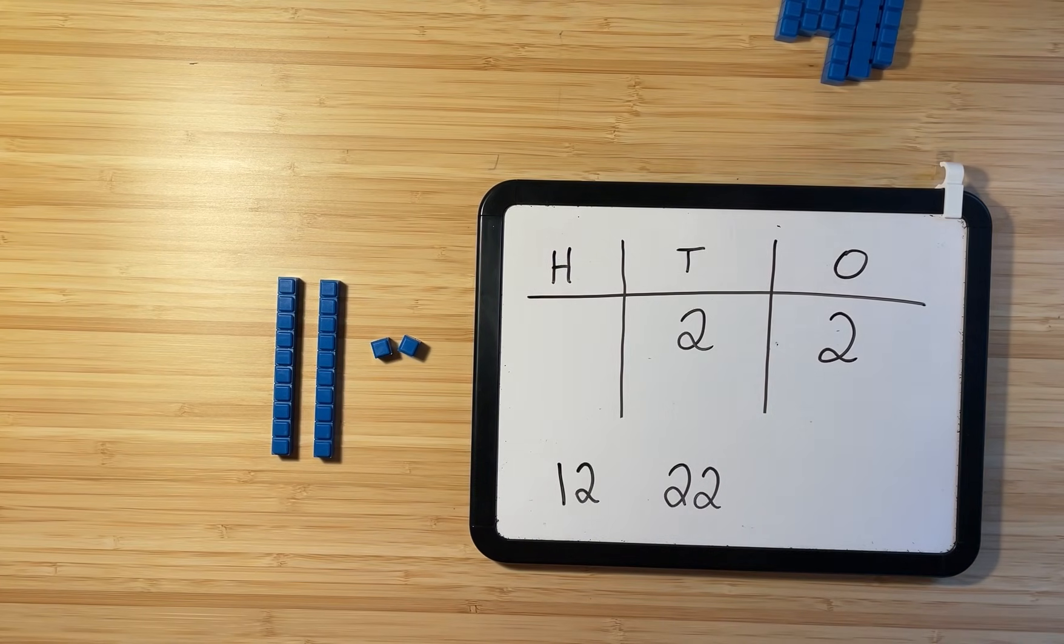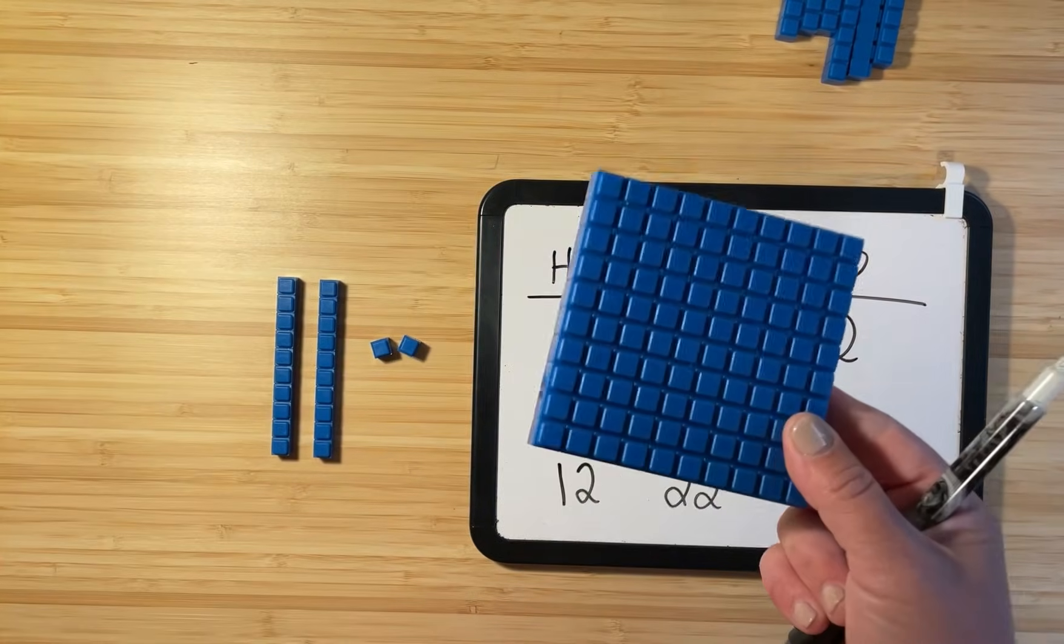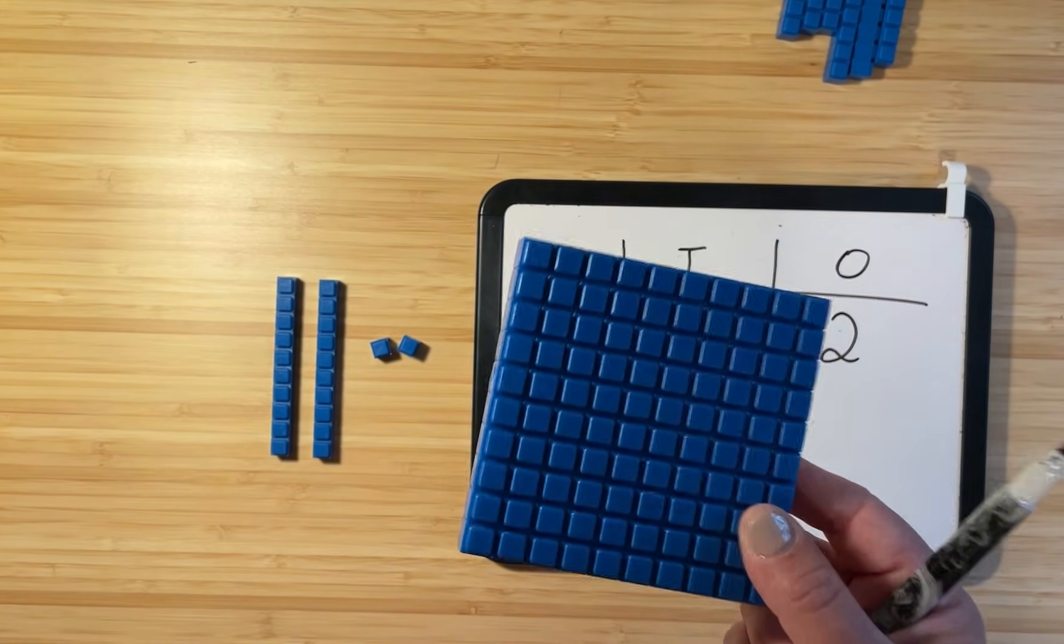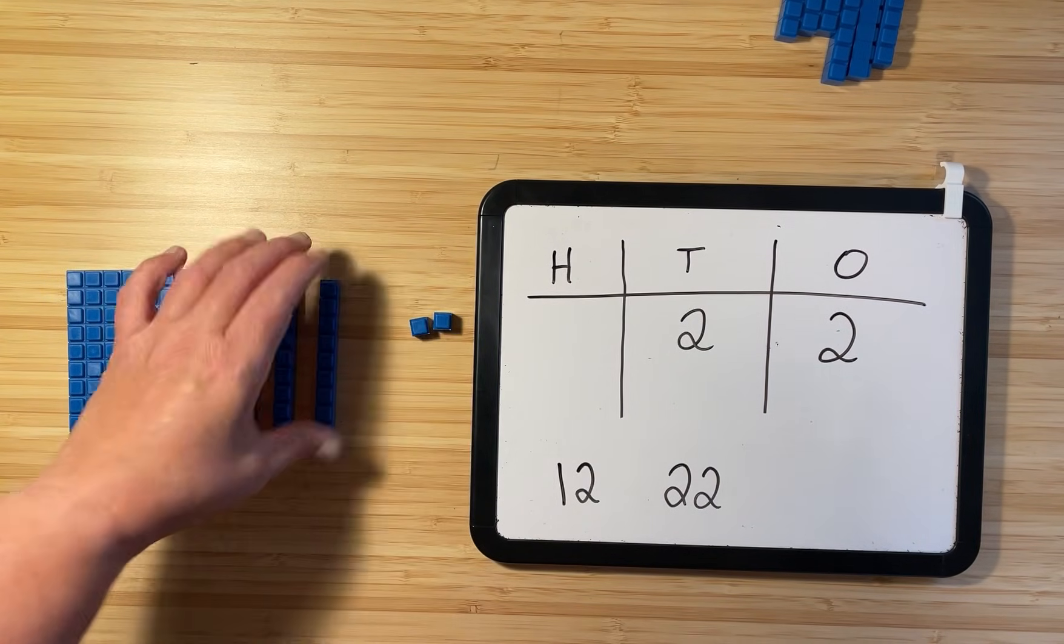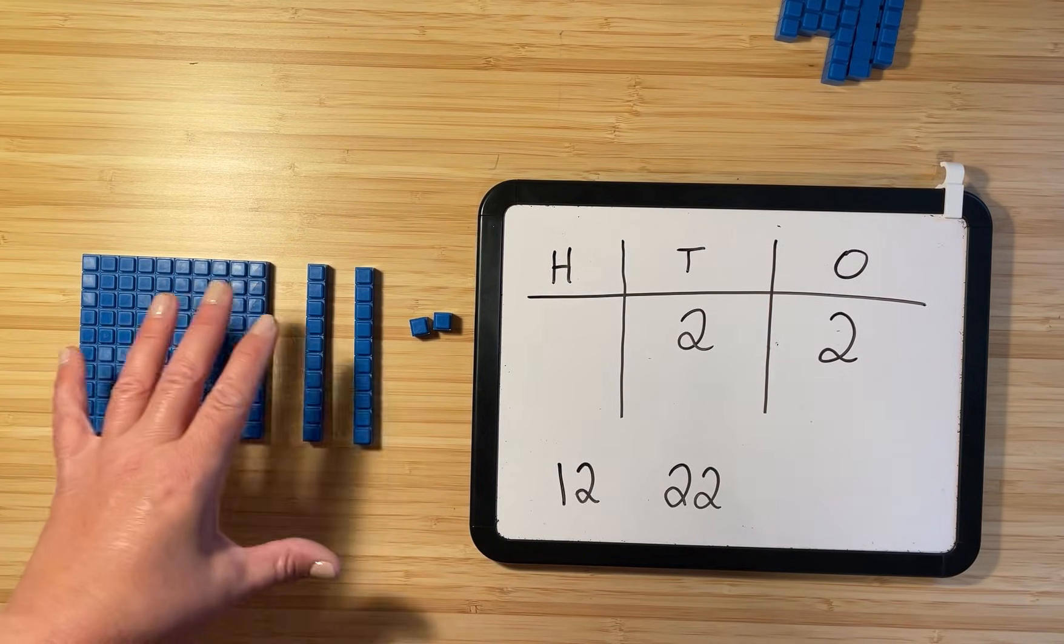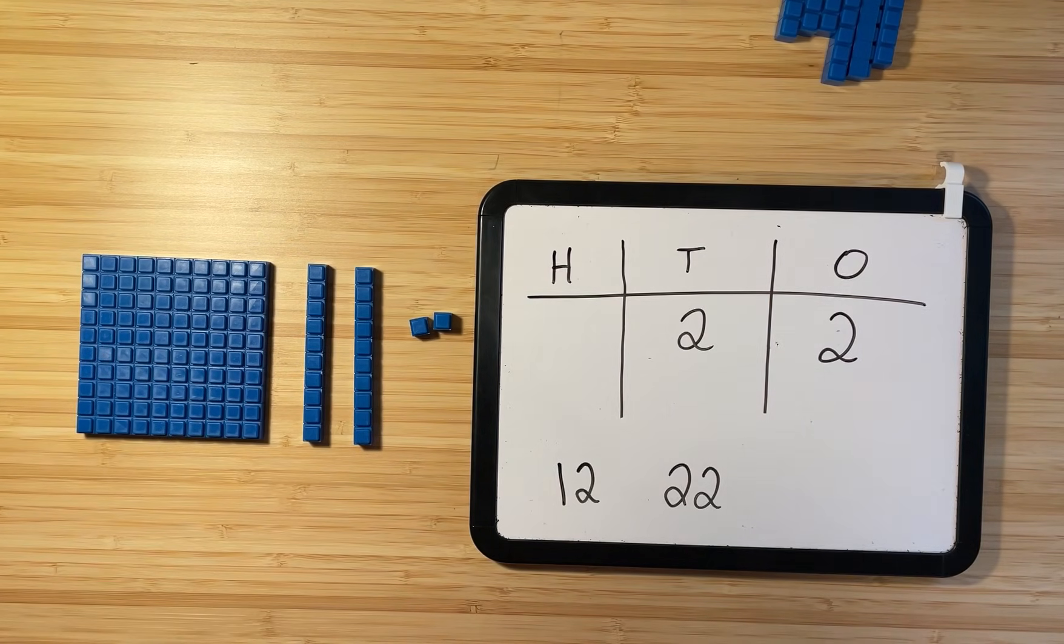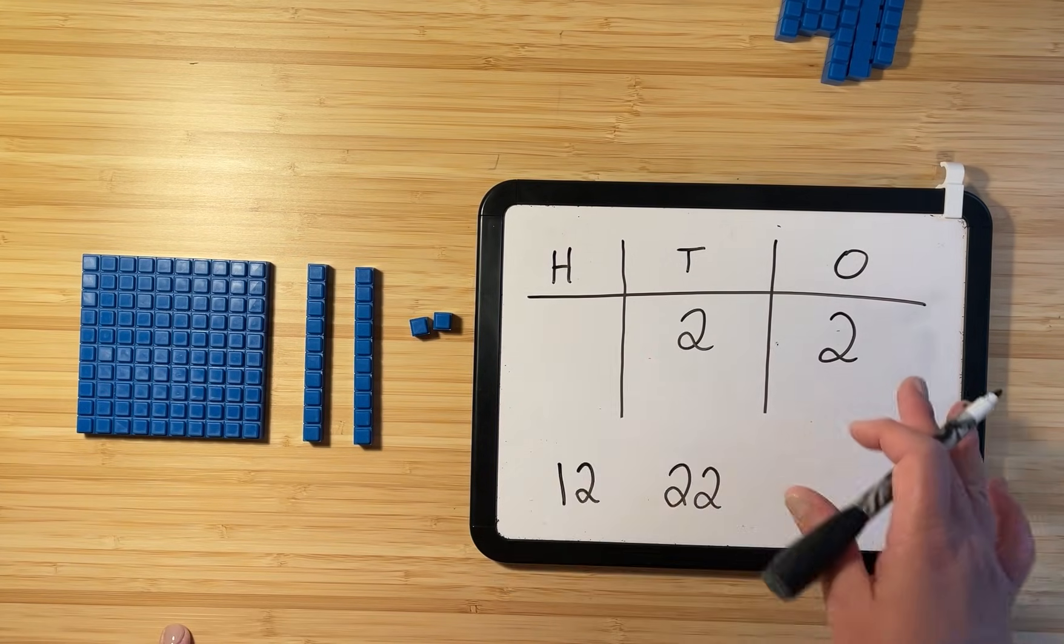Now we're going to get a little bit trickier. We are going to add one of our hundreds blocks to this number. I'm going to put it right there. And I want you to think really hard about what number these blocks represent now.